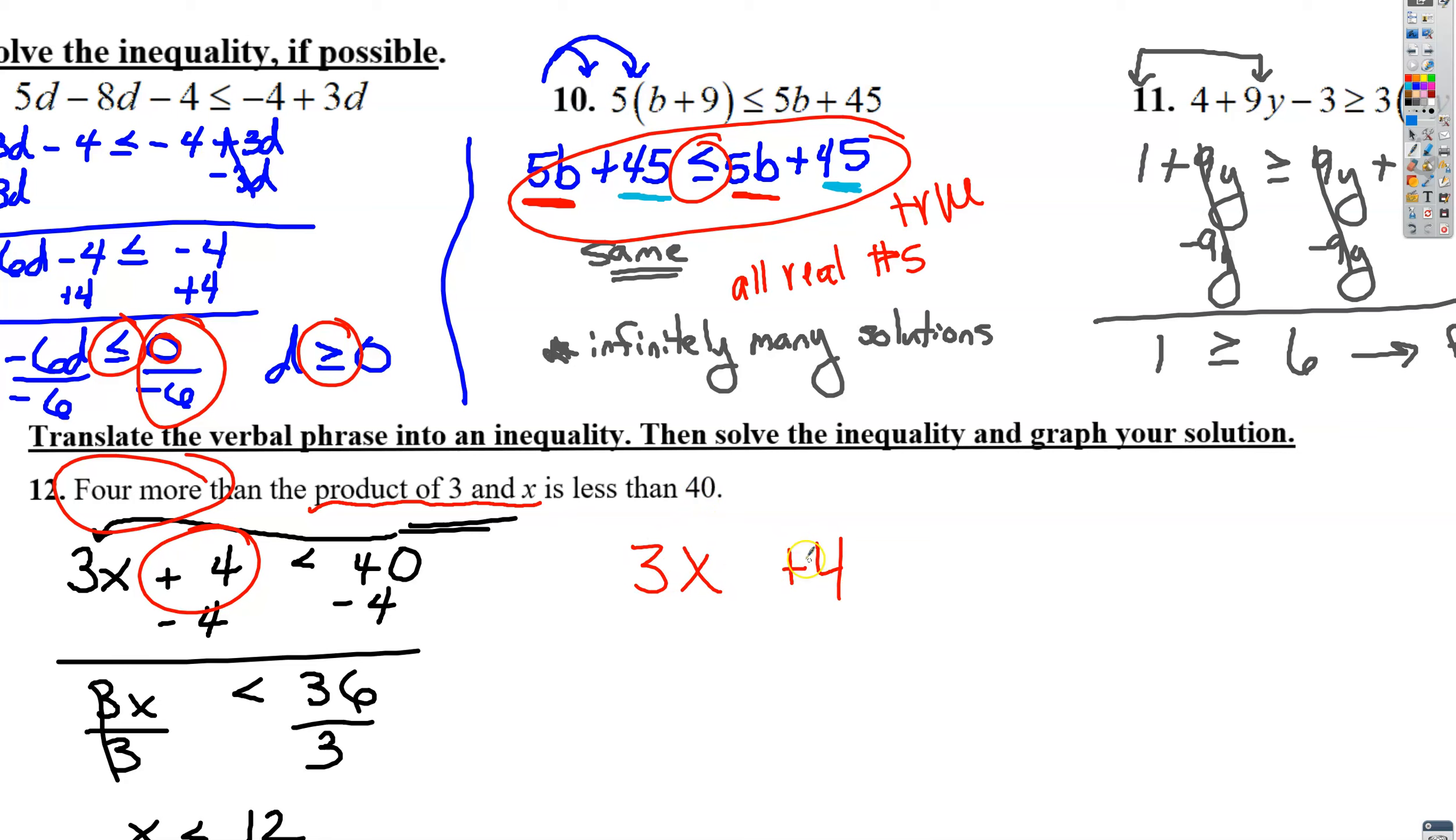But then it says the product of three and x. Product means multiplication, so three times x. And then four more than that is the plus four is less than 40, so that's a less than symbol 40, which is exactly what he had written right here. Then we solve by adding four to both sides and dividing by three. You don't need to flip the sign when you divide because you divided by a positive, so x is less than 12 is the answer.